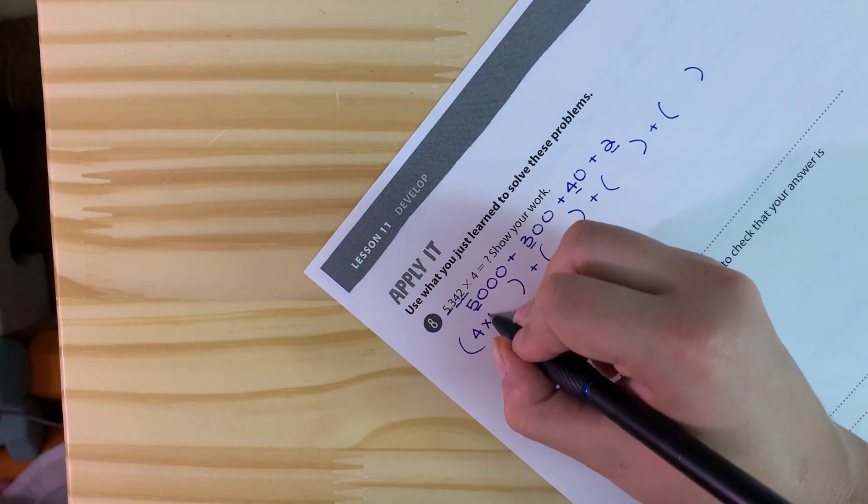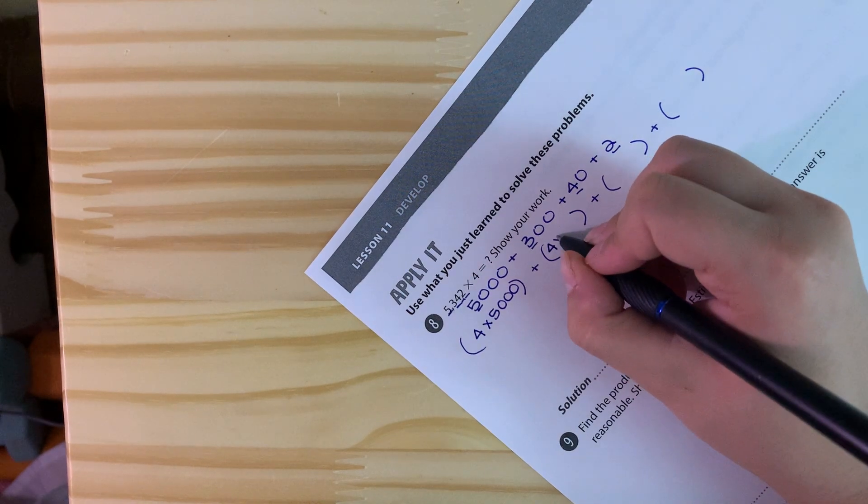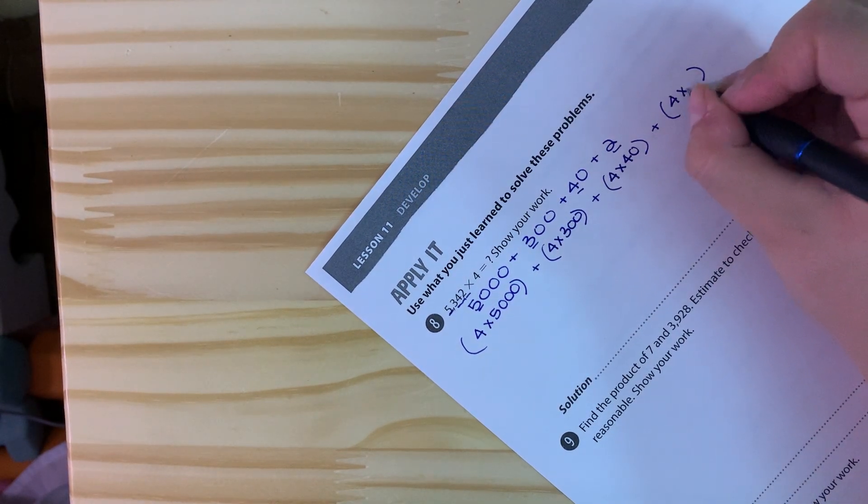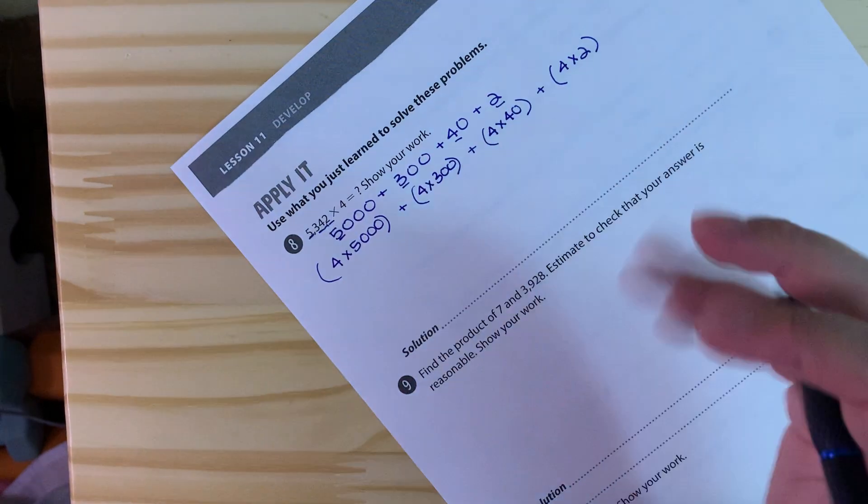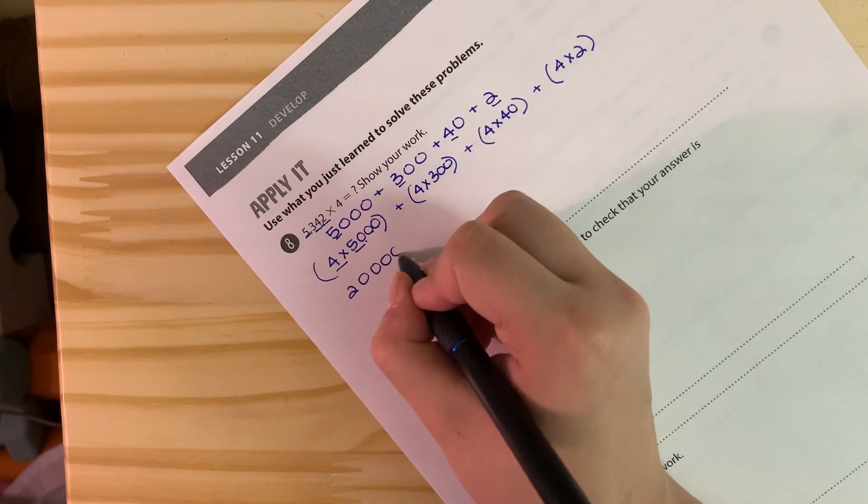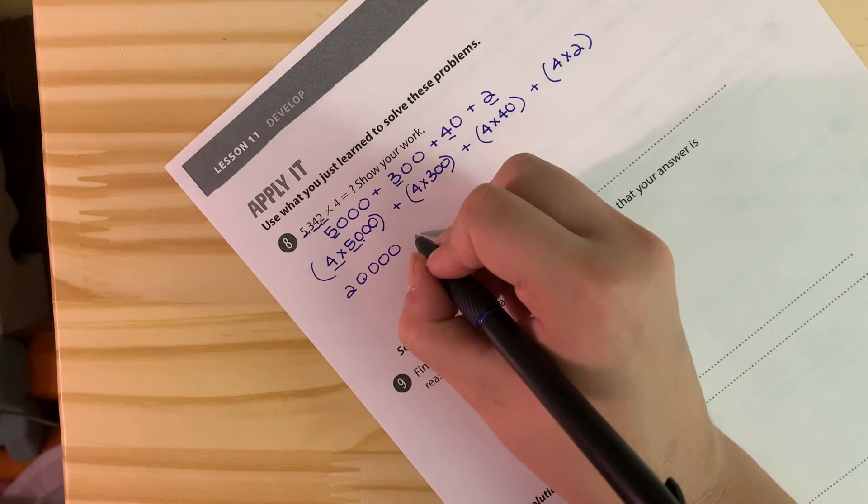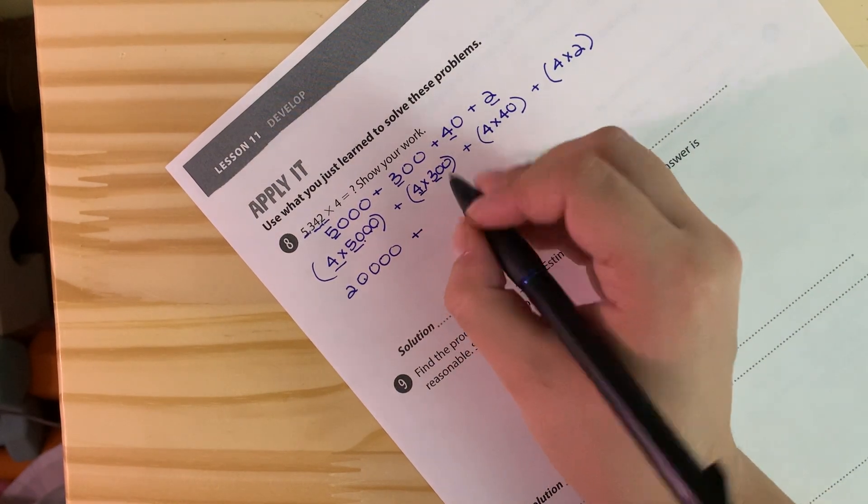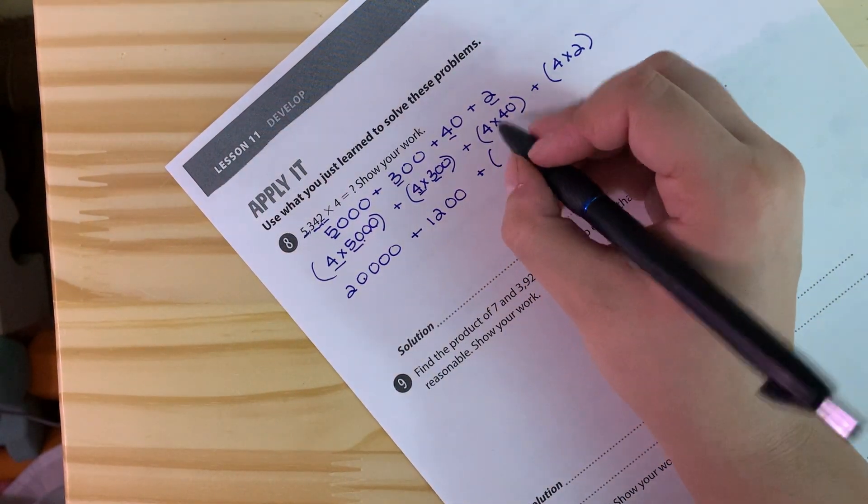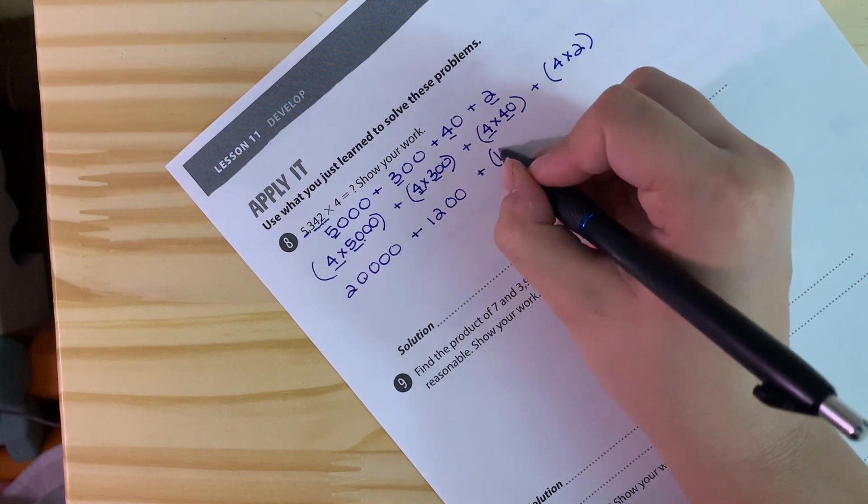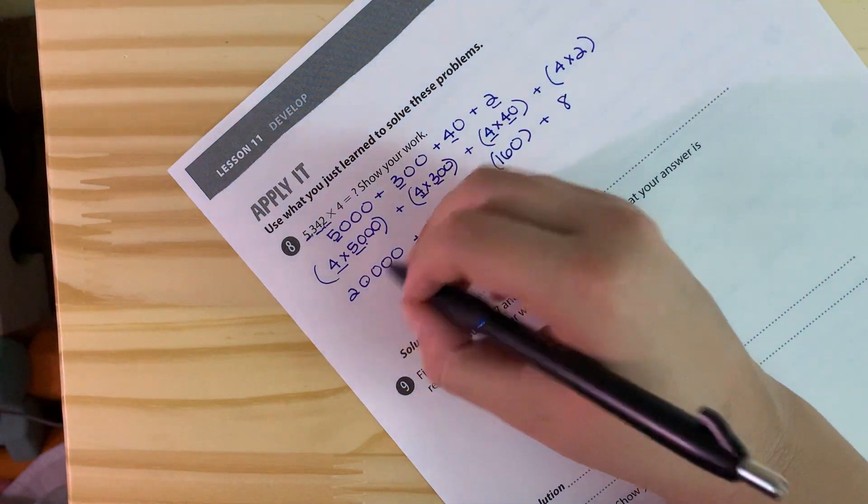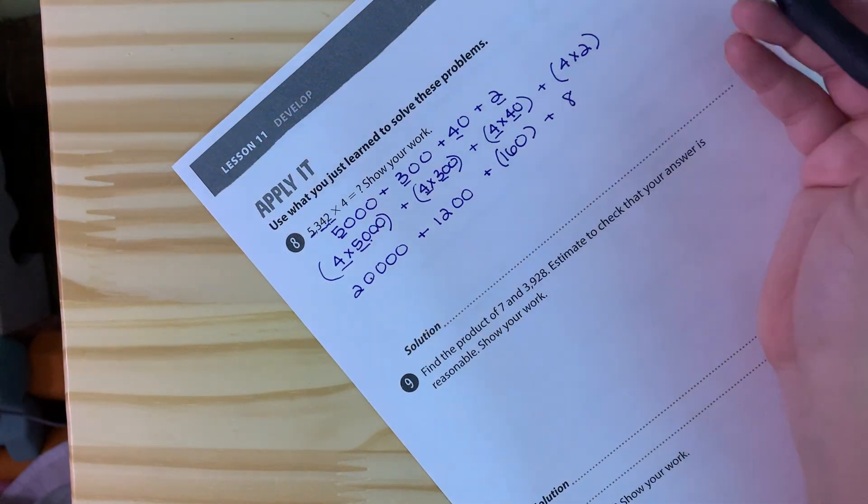So we're going to have 4 times 5,000, 4 times 300, 4 times 40, and then 4 times 2. Then we just go and plug them in and add them together. So 4 times 5 we know is 20, and then we're going to add those three zeros. We're going to still add those three zeros, plus 4 times 3 is 12 and then add the two zeros, plus 4 times 4 is 16, add the zero, plus 4 times 2 which we know is 8.